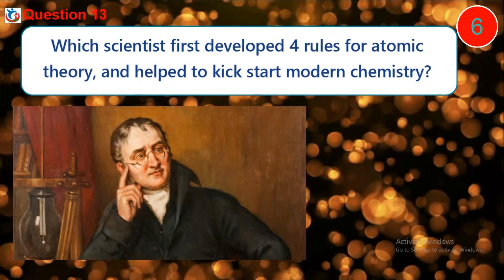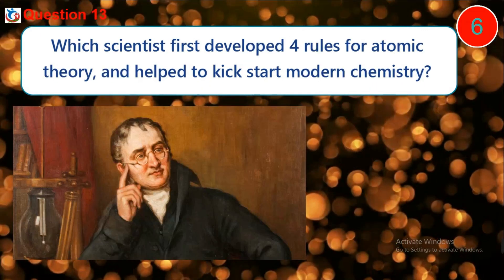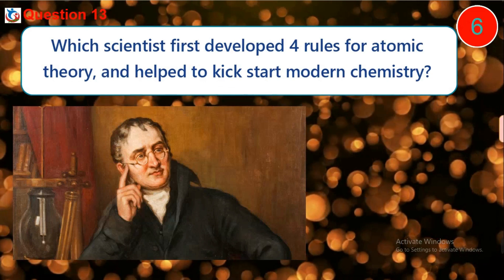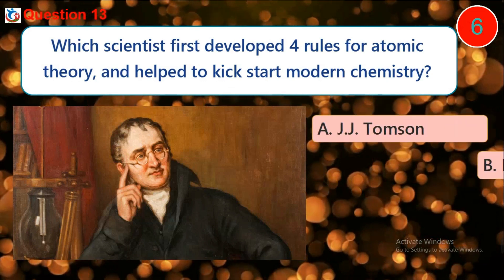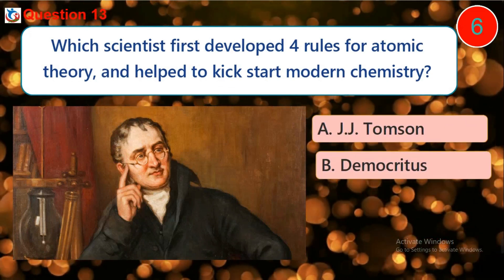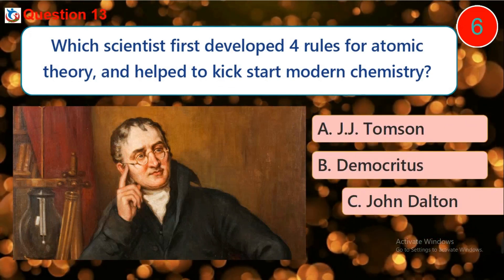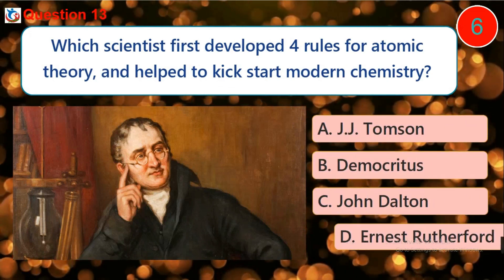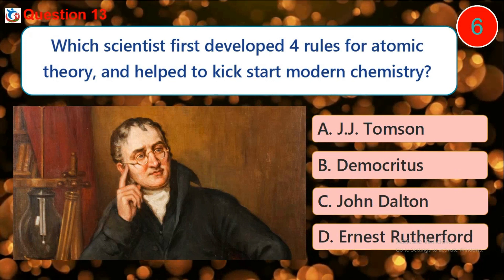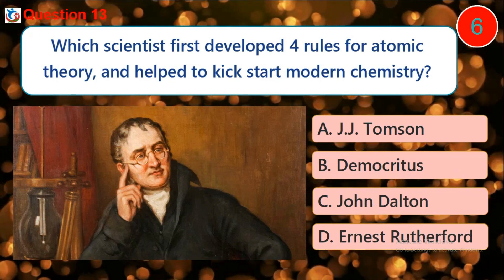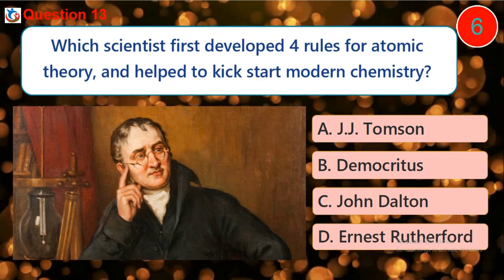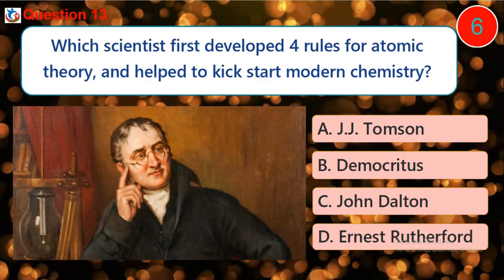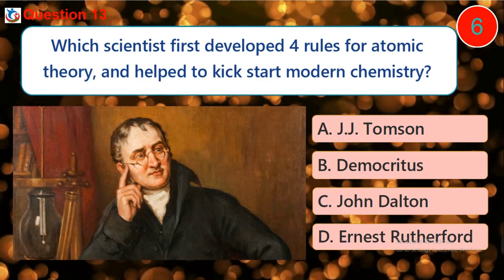Question 13. Which scientist first developed four rules for atomic theory and helped to kickstart modern chemistry? A. J.J. Thompson. B. Democritus. C. John Dalton. D. Ernest Rutherford.